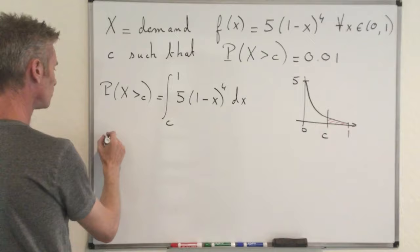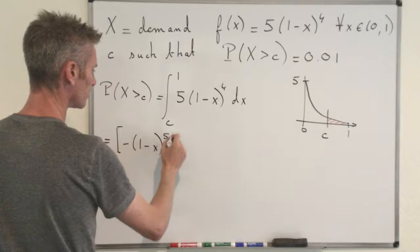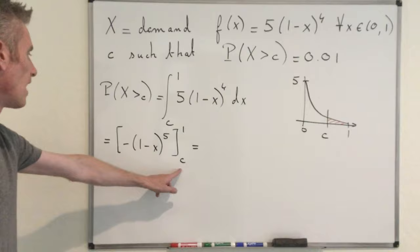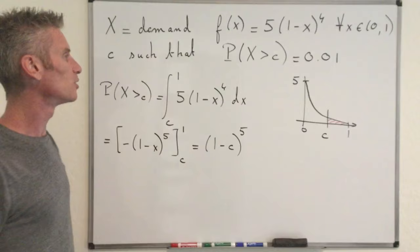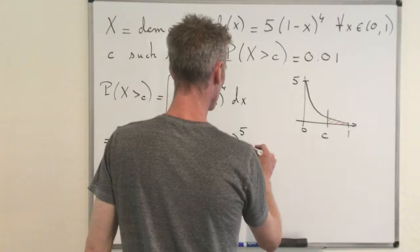Then let's compute the anti-derivative of this. So that's equal to minus 1 minus X at the power 5. Okay, that's the anti-derivative of this function here. We go from C to 1, that's equal, so at 1, that's 0. At C, we have a 1 minus C at the power 5. So 1 minus C at the power 5 is equal to the probability that the demand exceed the capacity of the tank. This should be equal to 0.01.